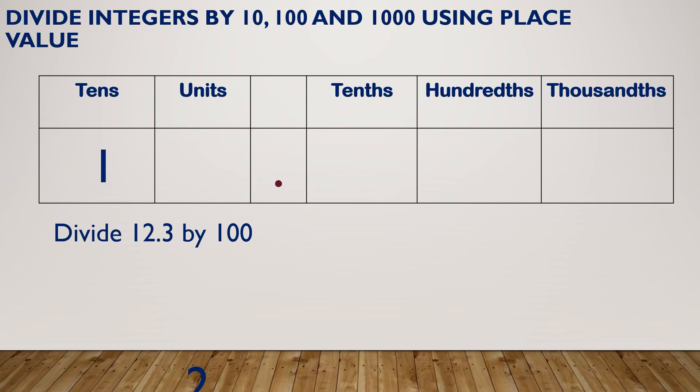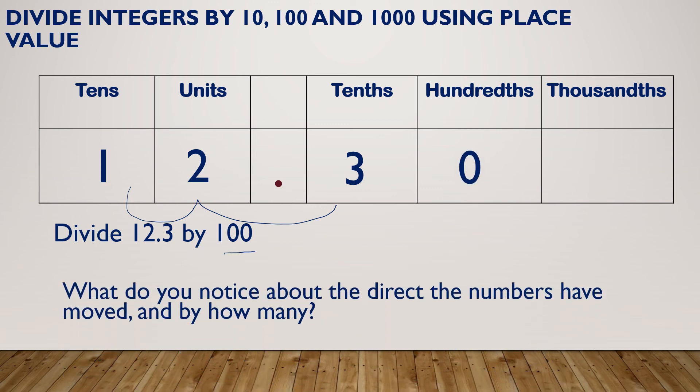So let's have a look at one more example. Divide 12.3 by 100. So because I've got two zeros in my 100, everything is moving two spaces to the left. So my 10 becomes a tenth. My unit becomes a hundredth and my tenth becomes a thousandth. So I've moved everything two spaces.